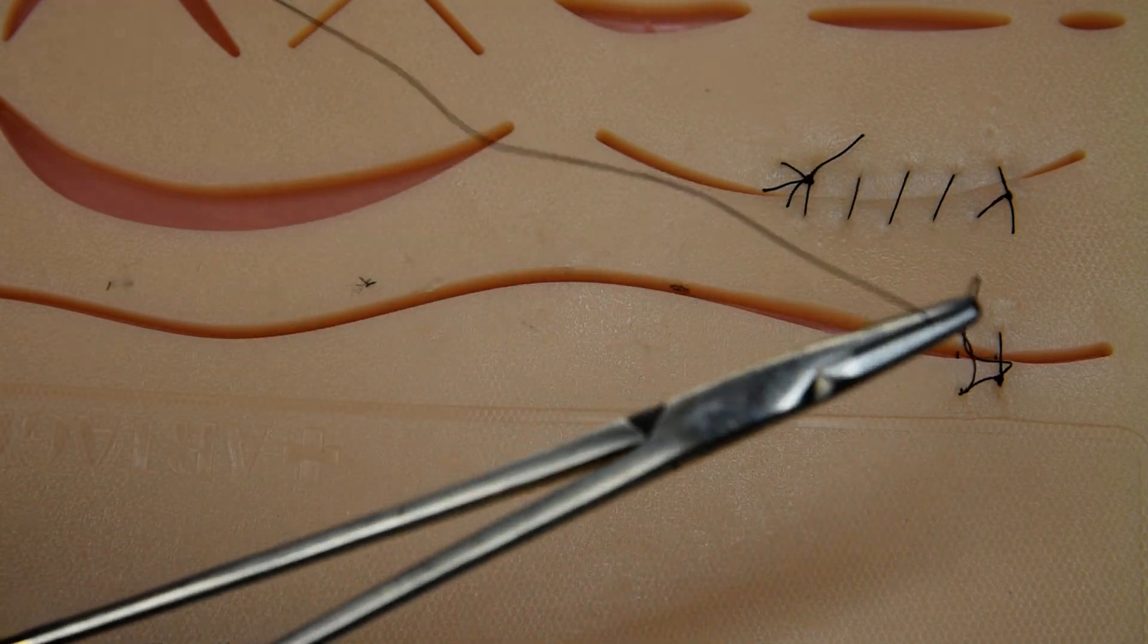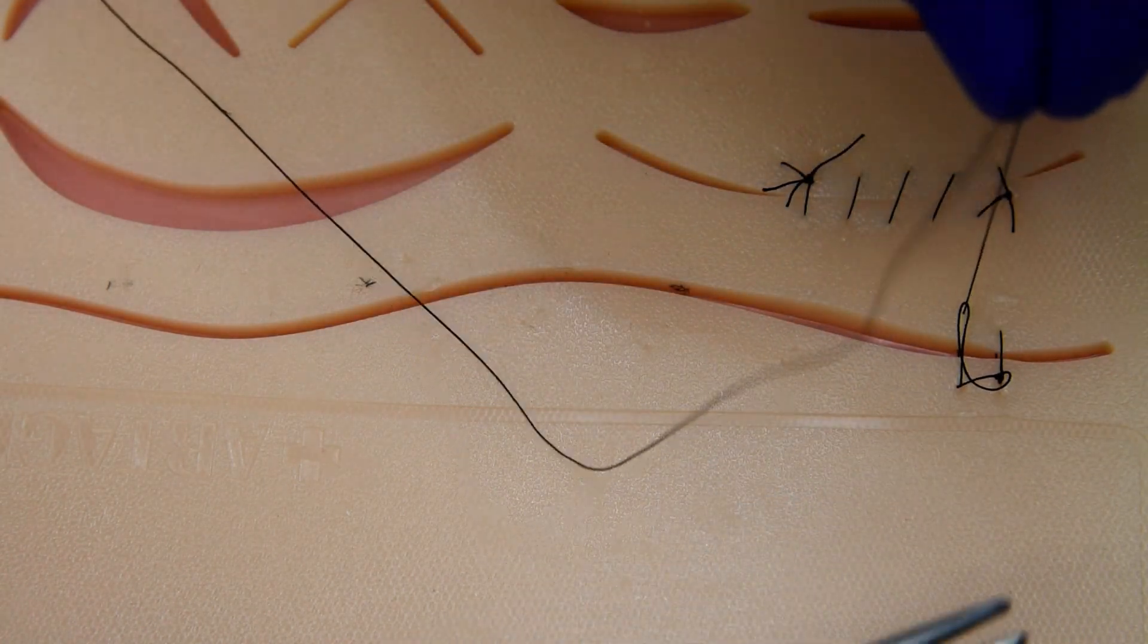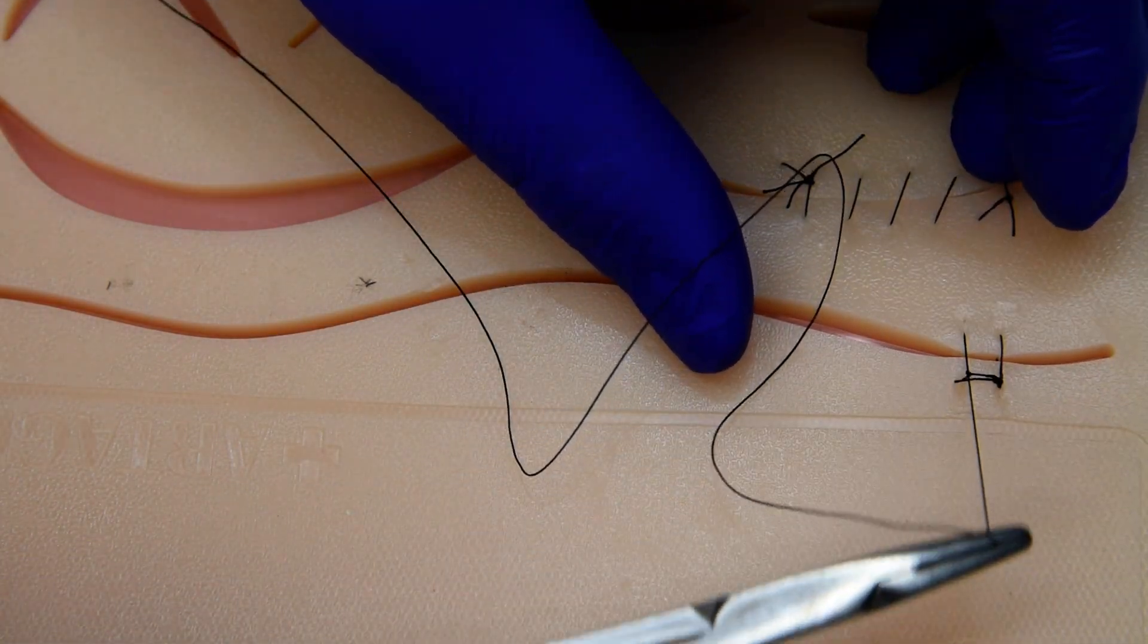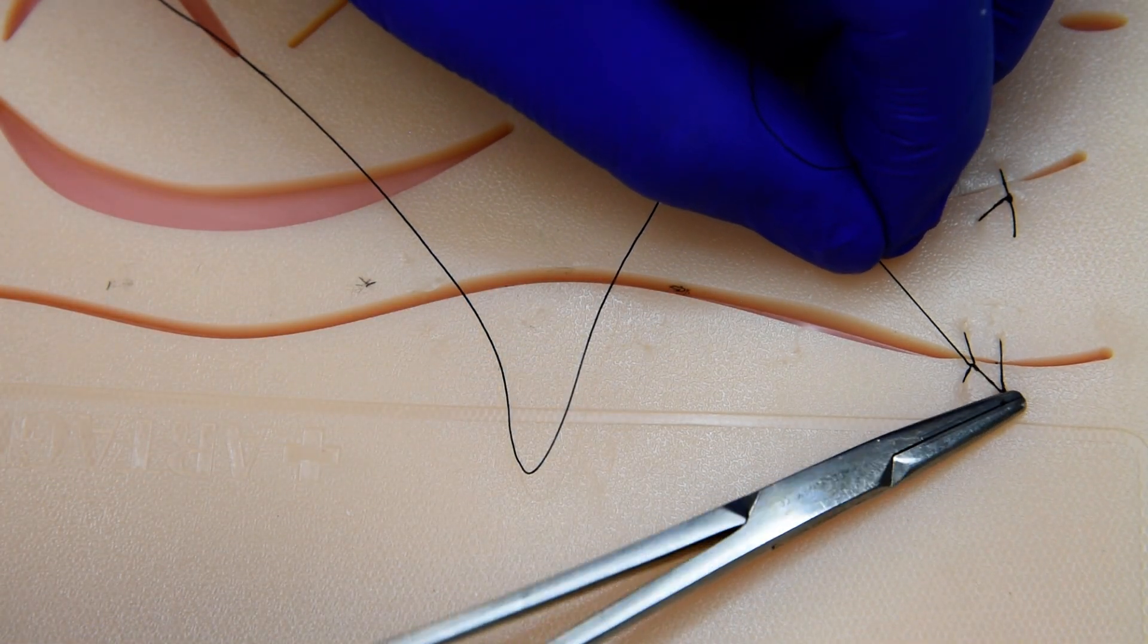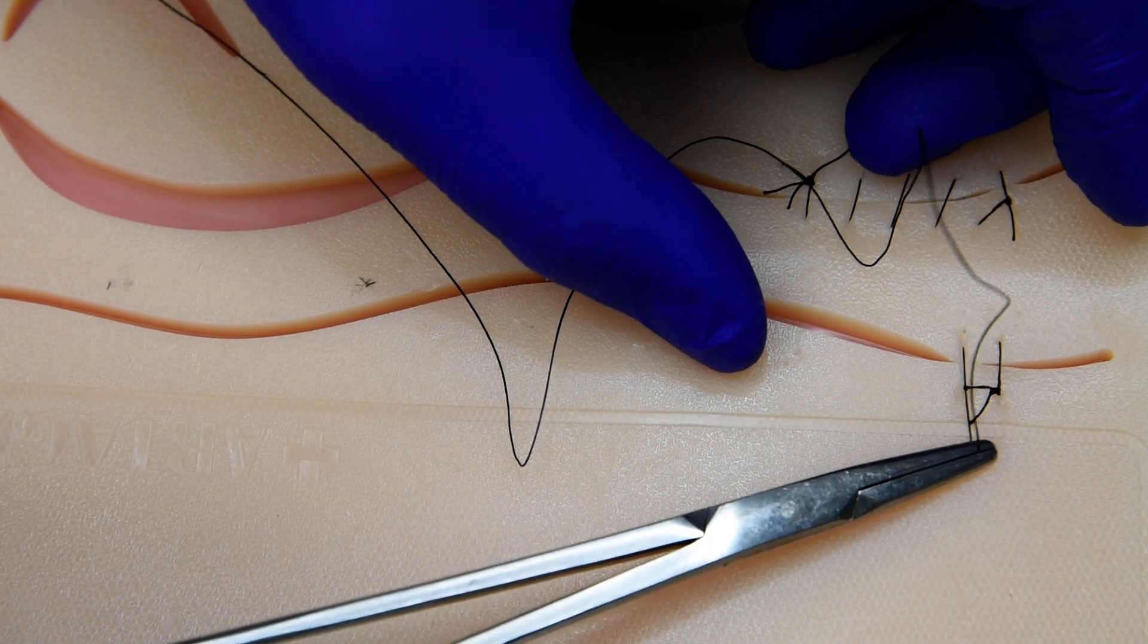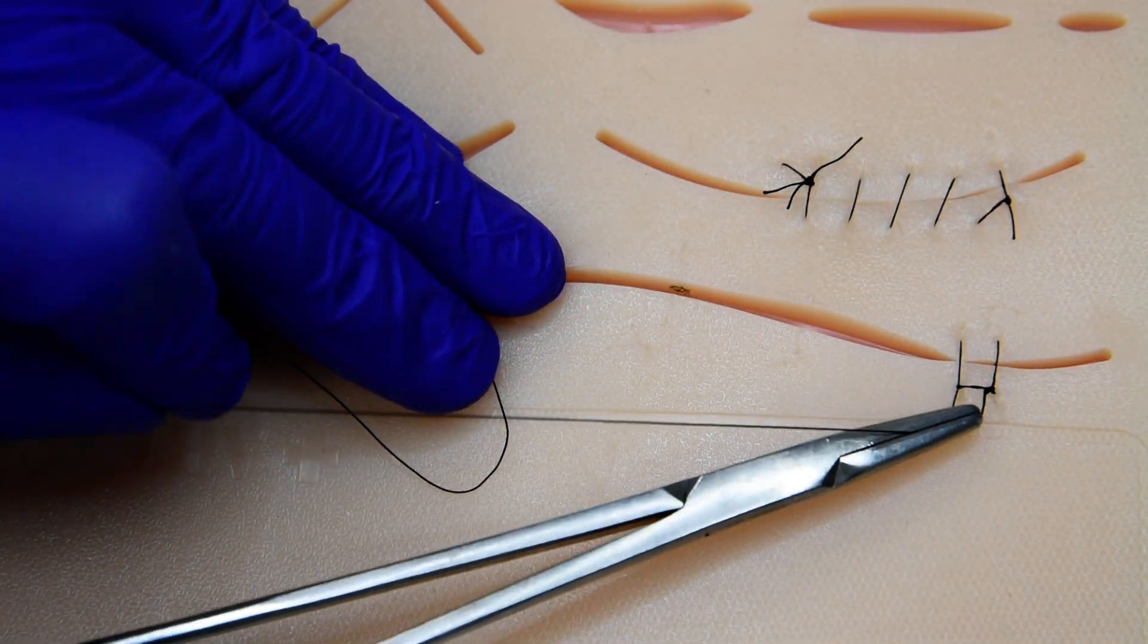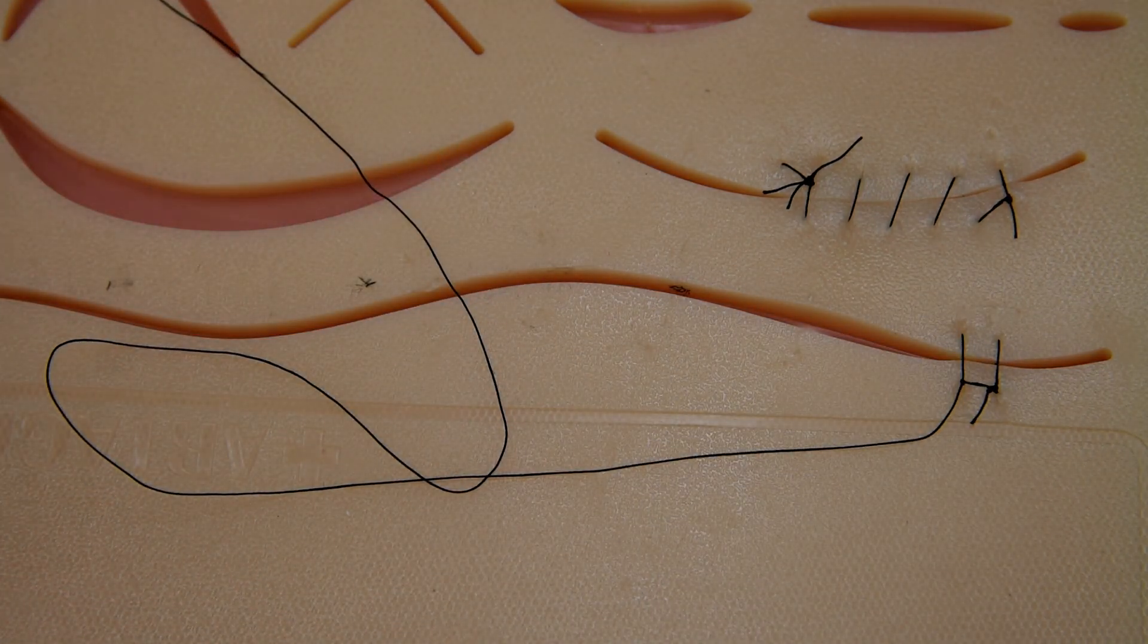Now as we cinch and tighten, careful not to lock ourselves out, especially with silk. When we get close to the knot being down, we're going to grab it and give it a little rock across the incision and then a lock to the side you're putting your knot on. Now you have tension going perpendicular to your incision line.